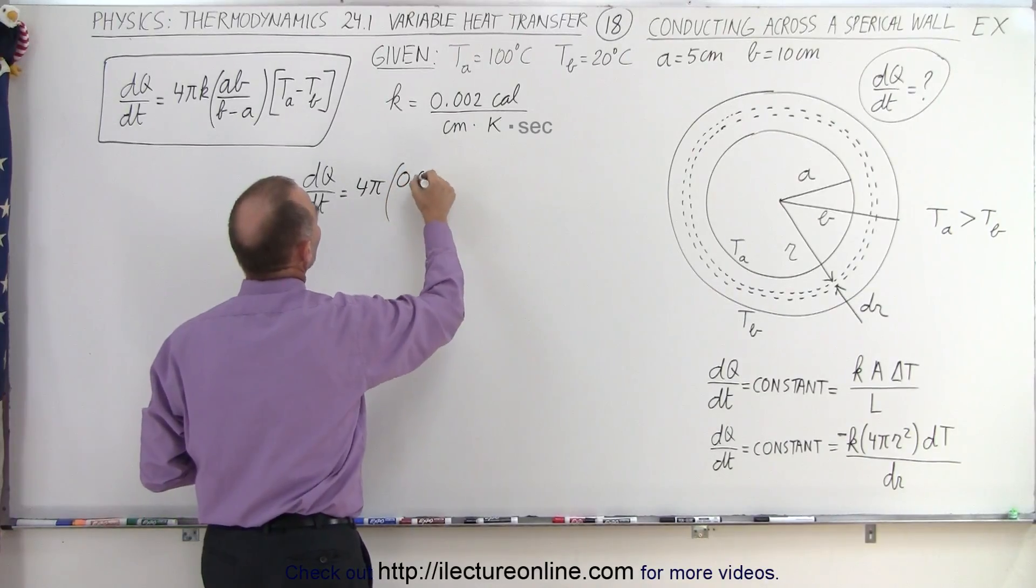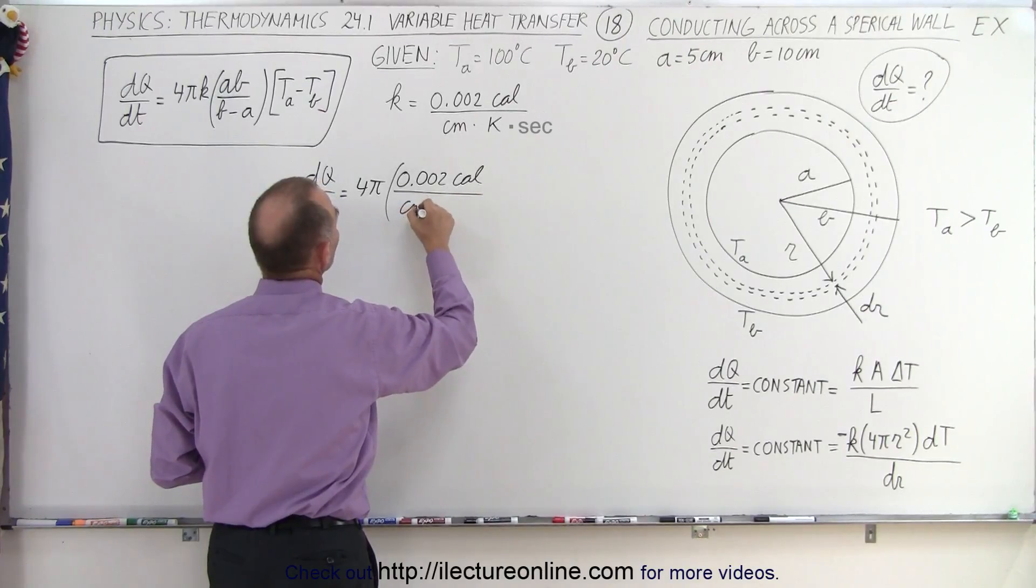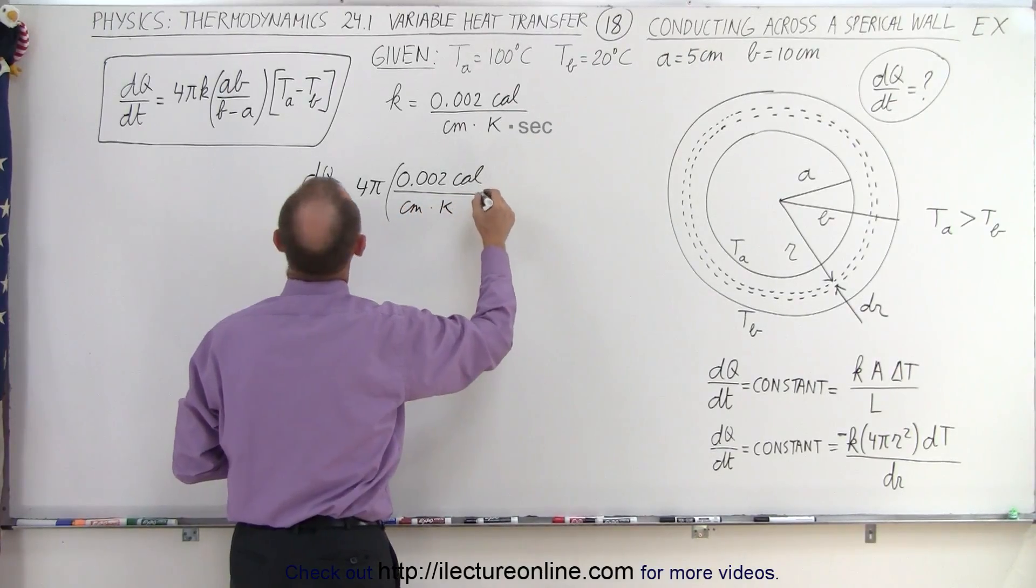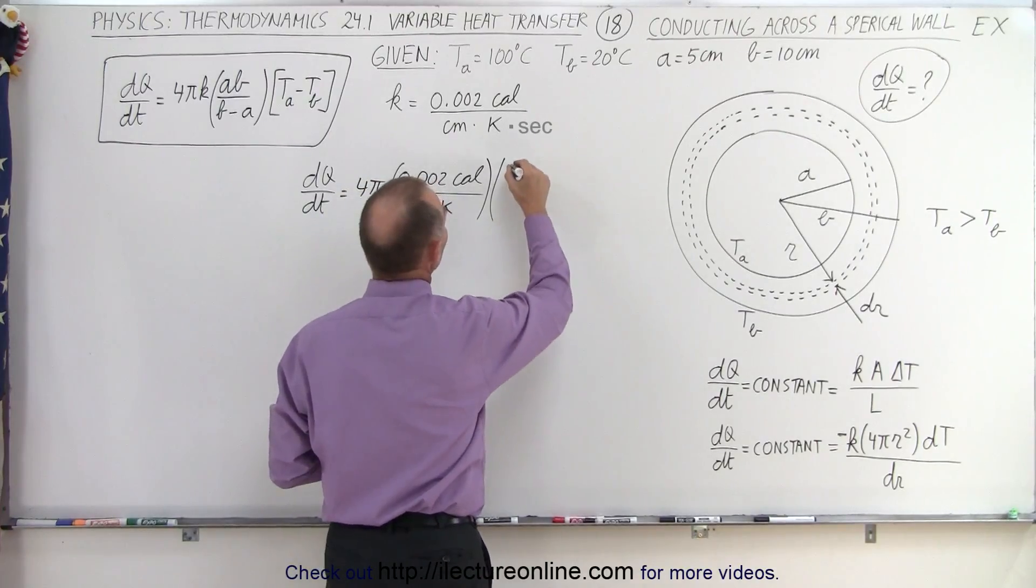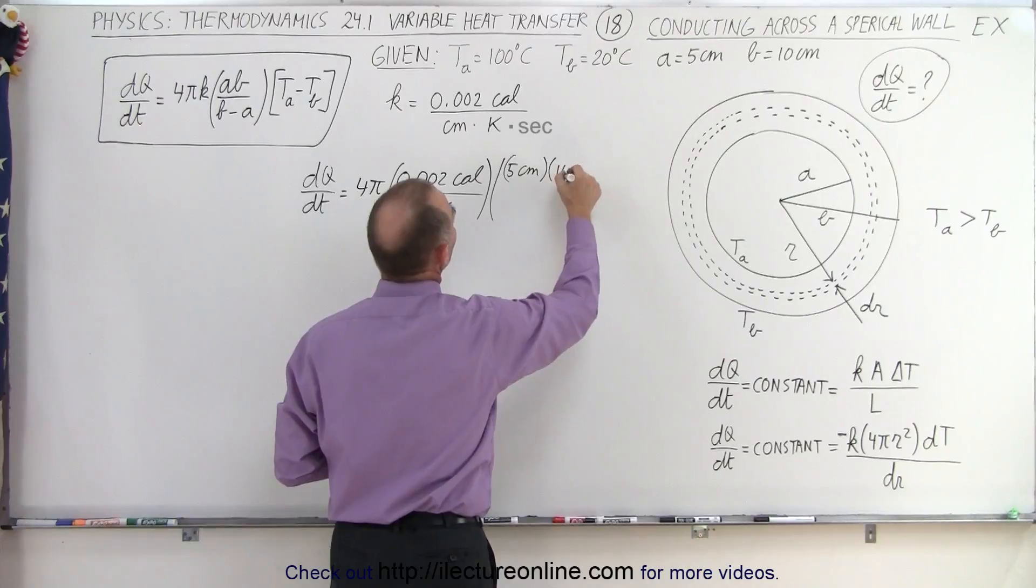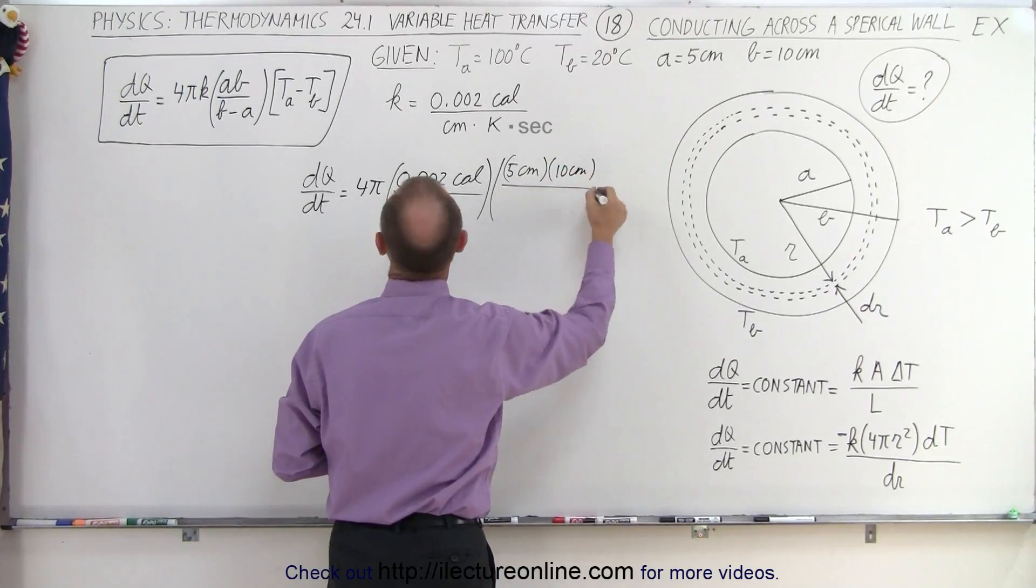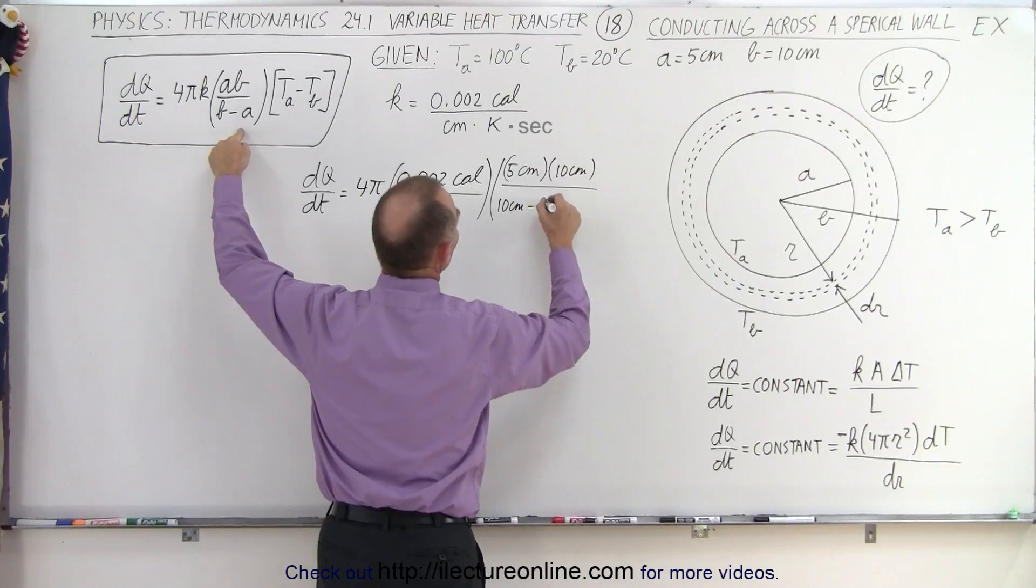Now K is going to be 0.002 calories per centimeter times Kelvin multiplied times A times B. So we have 5 centimeters multiplied times 10 centimeters divided by B minus A which is 10 centimeters minus 5 centimeters.